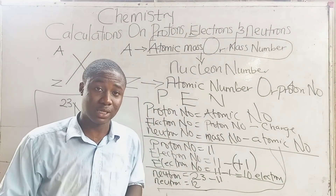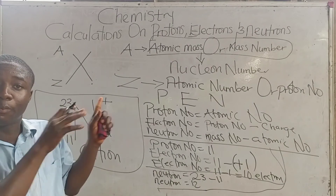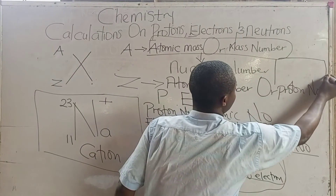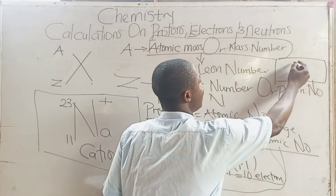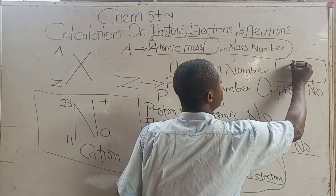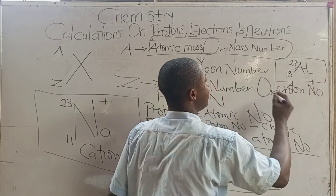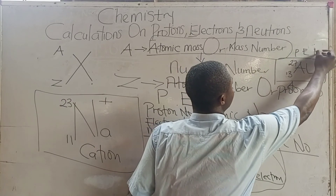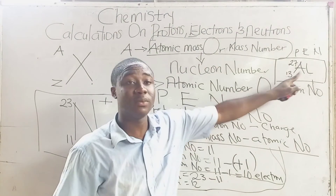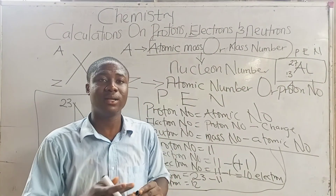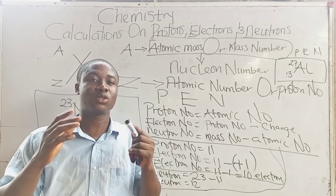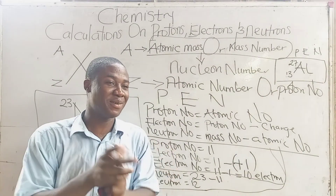I believe you now understand this concept better. I'm going to put a practice question here for you to answer in the comment section below: calculate the proton number, electron number, and neutron number for aluminum-27 with atomic number 13. Thank you very much, and please share these videos with your friends and subscribe to the channel.